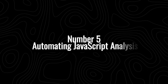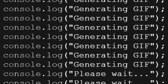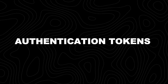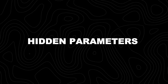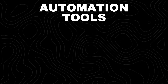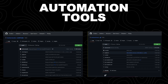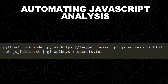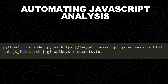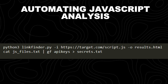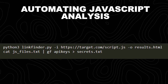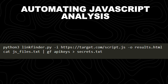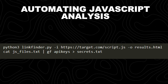Number 5: automating JavaScript analysis. JavaScript files often contain valuable information like API keys, sensitive endpoints, authentication tokens, and hidden parameters. Instead of manually going through each JavaScript file, automation tools like LinkFinder and GF can quickly extract useful data, saving time and uncovering vulnerabilities faster. The first command automates JavaScript analysis using LinkFinder, a tool that extracts hidden endpoints, API URLs, and links from JavaScript files. The second command automates API key extraction from JavaScript files using GF, a powerful pattern-matching tool for bug bounty hunting.